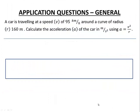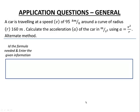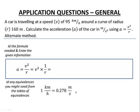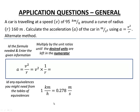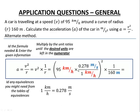Our next example is the same question but with an alternate method, included to show that there are often different valid approaches. We identify the formula a = v² / r as before. From the velocity category of our table of equivalences, one kilometer per hour equals 0.278 meters per second. We can use that equivalence to convert the velocity before squaring.